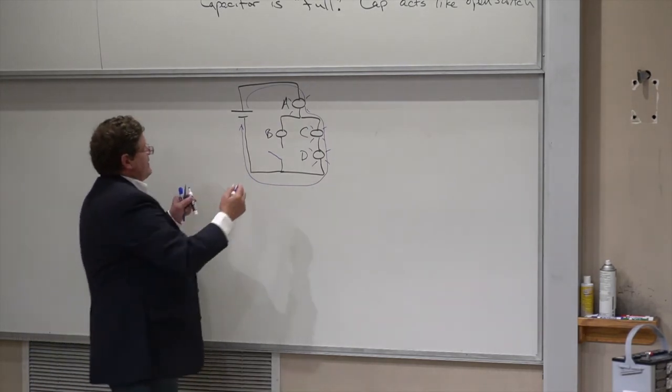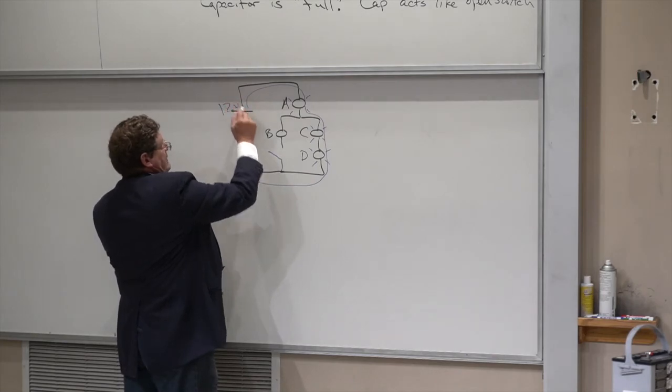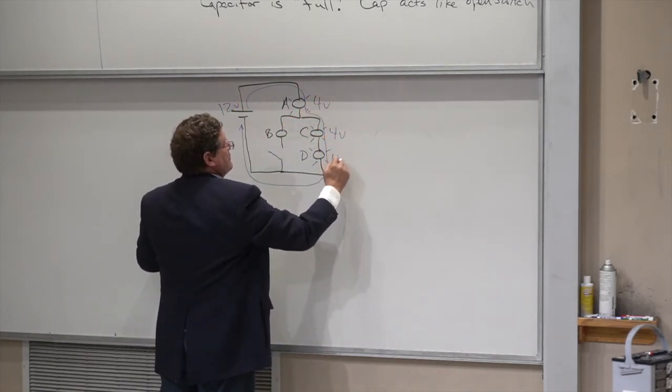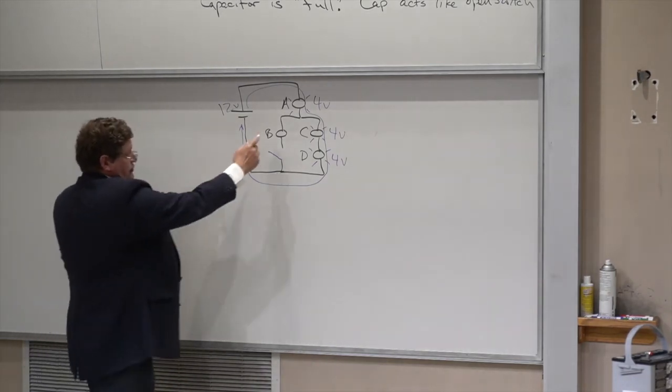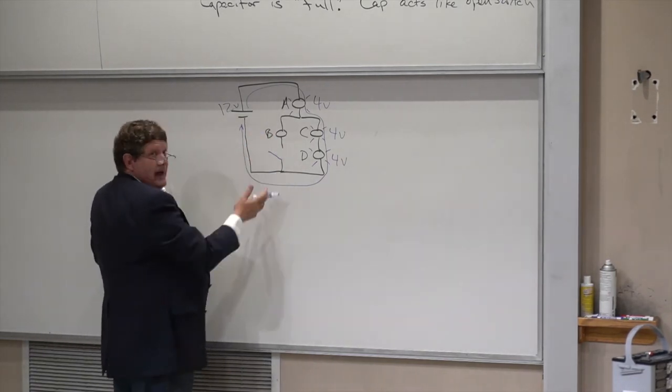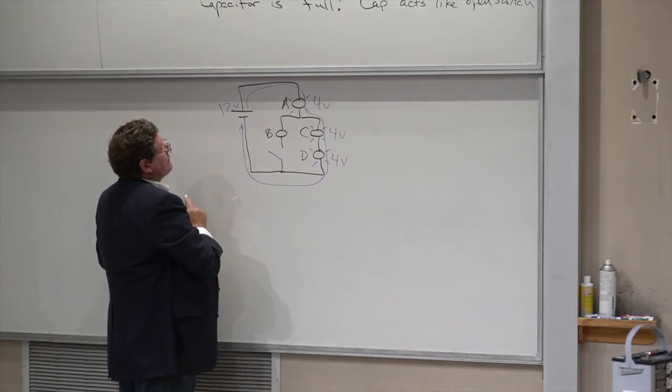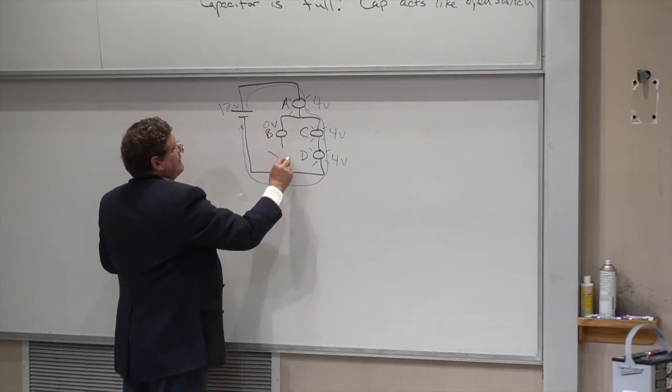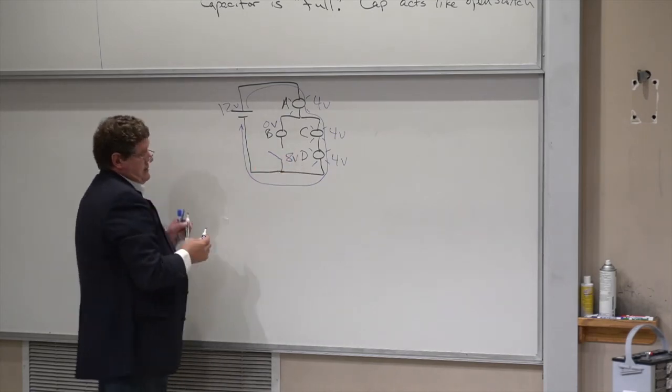And that means they each have to, if this is a 12-volt battery, they have to have four volts, four volts, and four volts. Now B is dark. It's on an incomplete path with no current flowing along it. So that's going to be zero volts, which means I have to have eight volts across the capacitor.